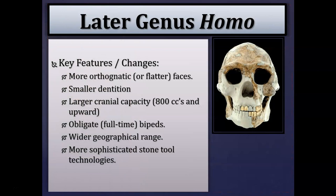Key anatomical features we see with Homo erectus and onward include more orthognathic or flatter faces — less prognathism — and dentition becoming more generalized and smaller. This is mainly due to a more generalized diet and the utilization of fire. Think of eating a cooked carrot versus a raw carrot — it's much easier on your jaws and chewing muscles. Control of fire to process and soften food led to evolutionary changes in dentition, jaw, and chewing muscles over time.